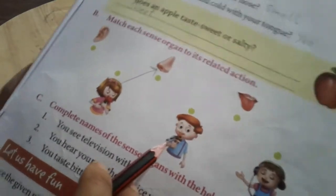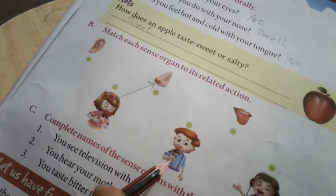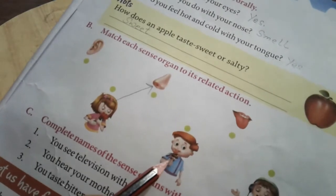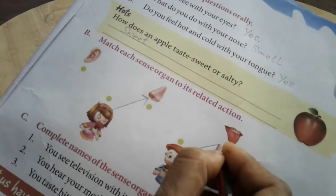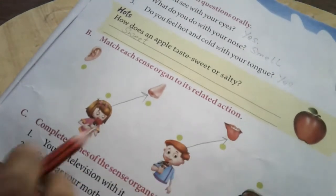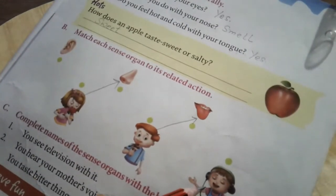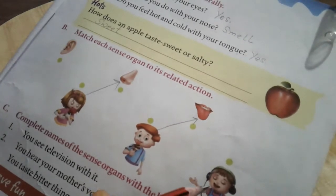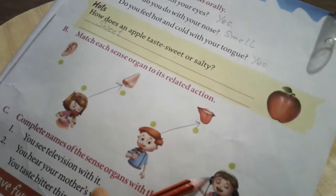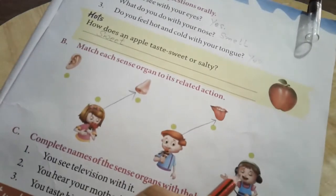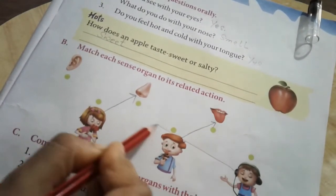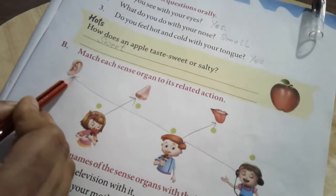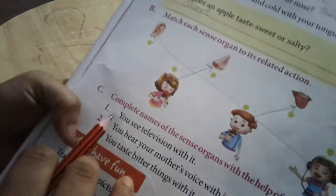Now, this boy, this little boy, he is tasting an ice cream. Where does he taste? With tongue. And this, I suppose this is a boy, this boy is listening to the music. He is listening to the song. So where does he hear? With his ears.